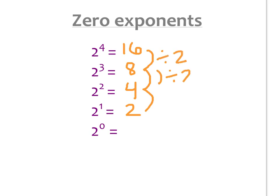Because really, going the other direction, I'm multiplying by 2 each time — each time I have an extra 2. I had 4 twos, 3 twos, 2 twos, 1 two. So if I keep that pattern up, I get 2 to the zero power is 1.